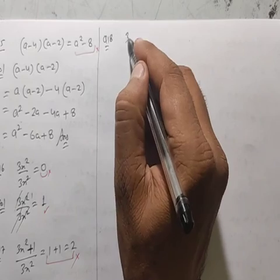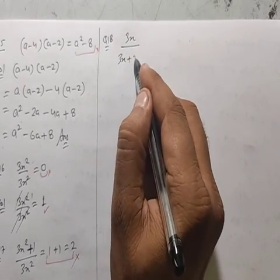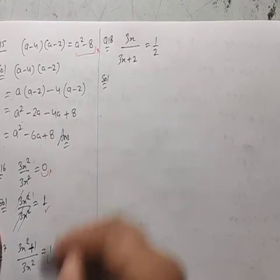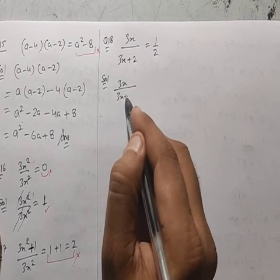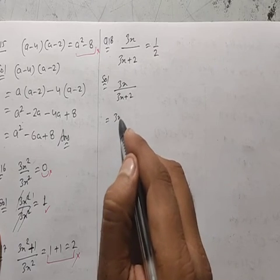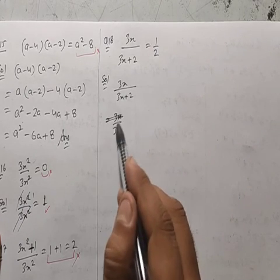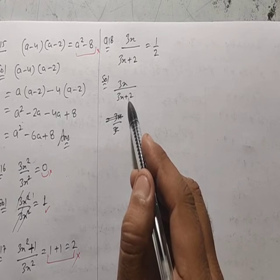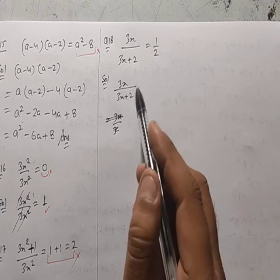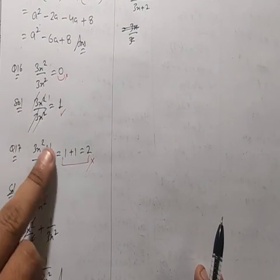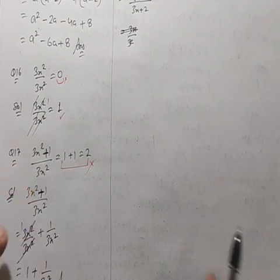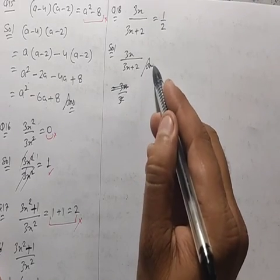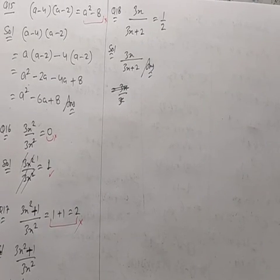Question 18: 3x/(3x+2) = 1/2 is given. Solution: 3x/(3x+2) cannot be simplified further because the denominator has a plus sign (unlike terms). When the denominator has a plus, it cannot be split into two separate fractions. So the answer remains 3x/(3x+2); 1/2 is incorrect.